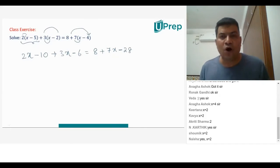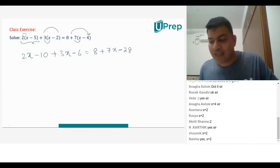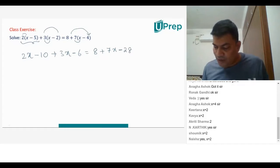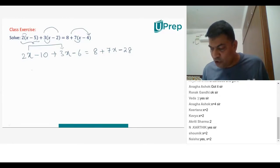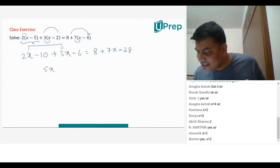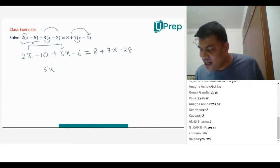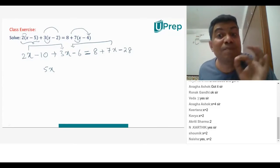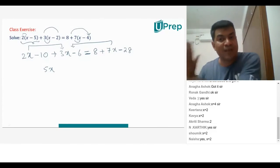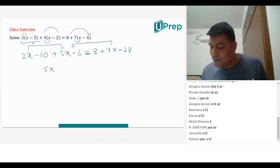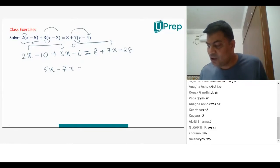So what do we do? We get x's on one side and numbers on the other side. We have 2x, you have 2x plus 3x, therefore 2x plus 3x will be 5x. And you have plus 7x. If this 7x comes on the left-hand side, it becomes minus 7x. So that is minus 7x is equal to on the right-hand side.